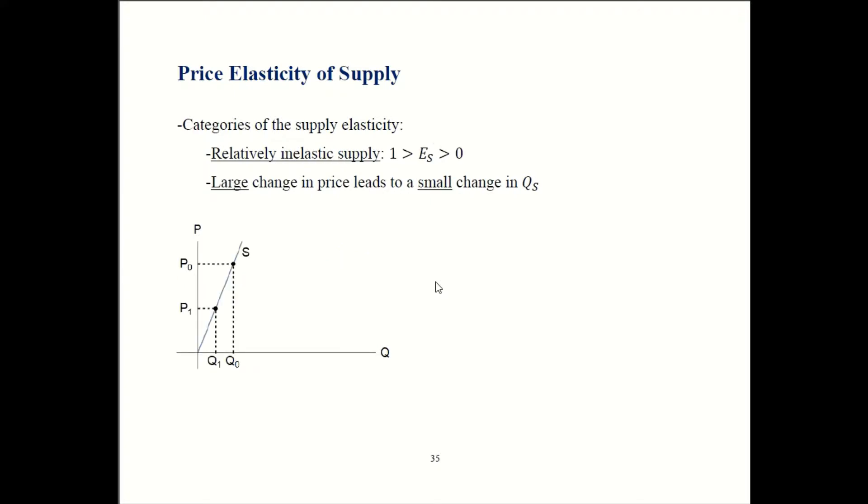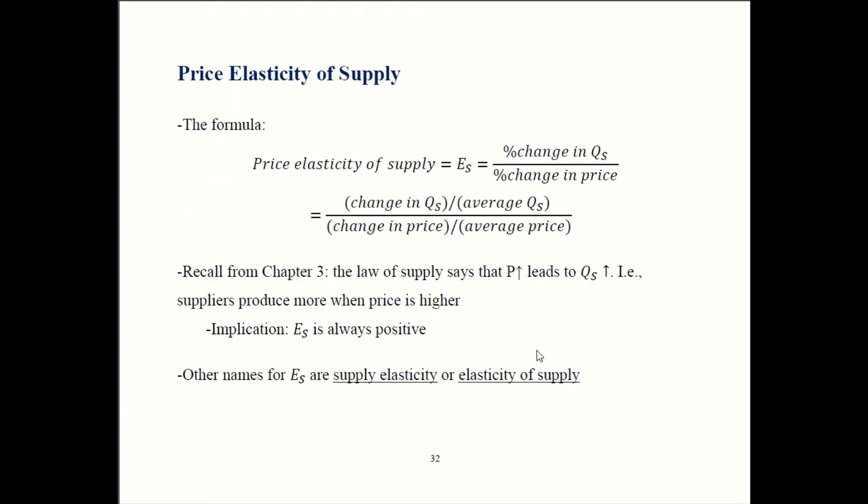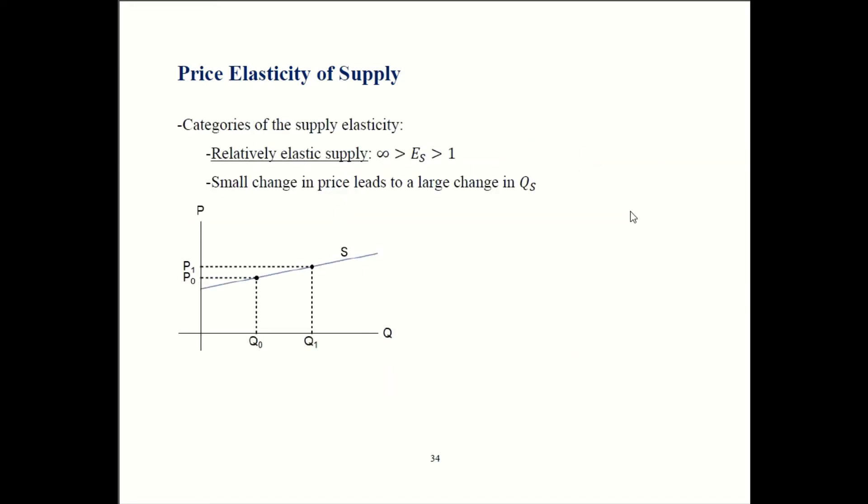Now, relatively inelastic supply looks like this. So you have a steeper slope here. It means that when price drops by a lot, quantity barely changes. So supply is not very responsive to price. So your elasticity will be bounded between one and zero. It could be something like a ten percent increase in price only gives you a five percent increase in quantity. If you plug those numbers in, ten percent increase in price, five percent increase in quantity, you get five over ten, which is half, less than one. So you can see that this range of values corresponds to this kind of graph where you have a steep slope.